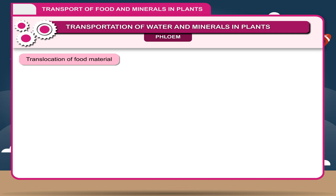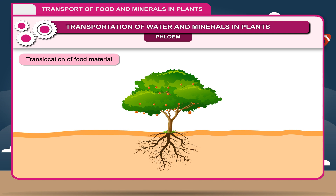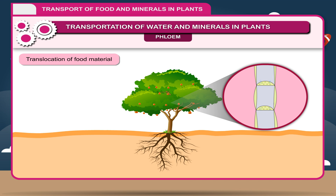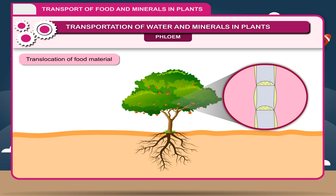Translocation of food material: The prepared food material reaching from the leaf to different plant organs is called translocation of food material. Phloem cells are involved in the transport of soluble food material from leaves to different plant organs. This movement of food through phloem cells is bidirectional — food can move upwards and downwards simultaneously.